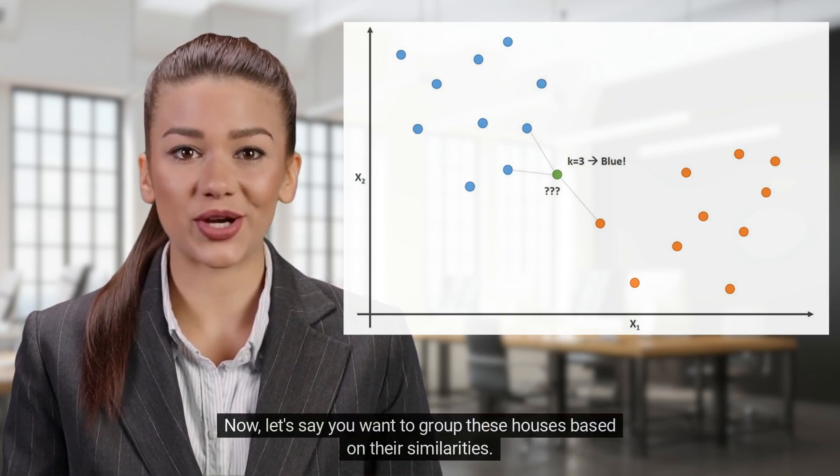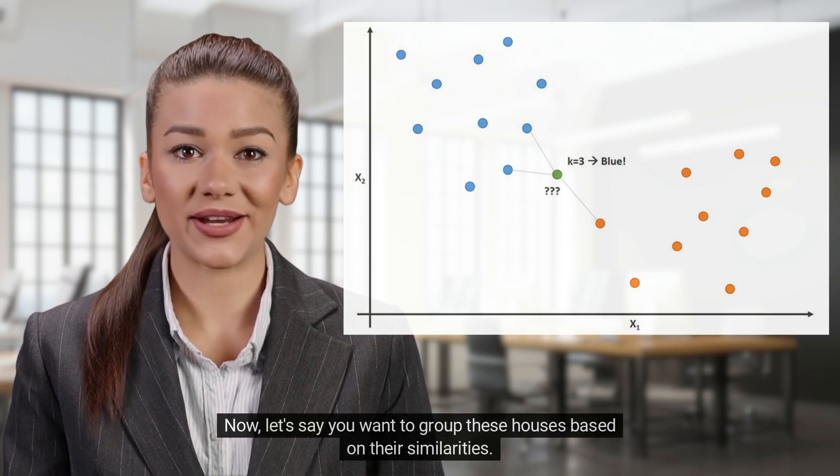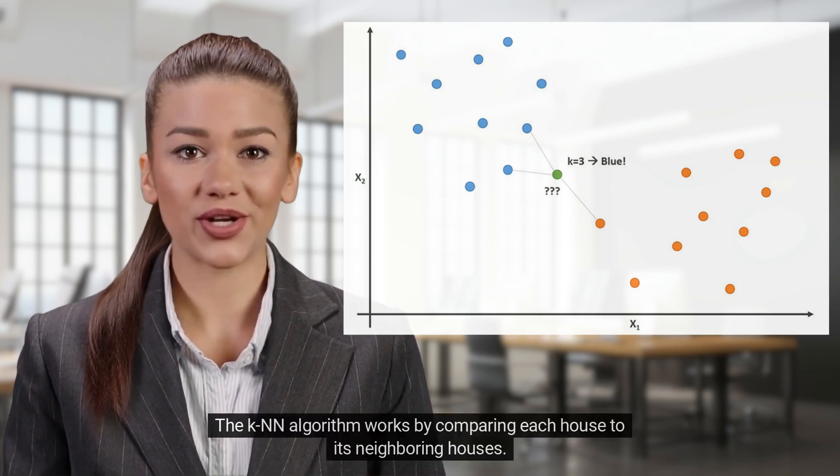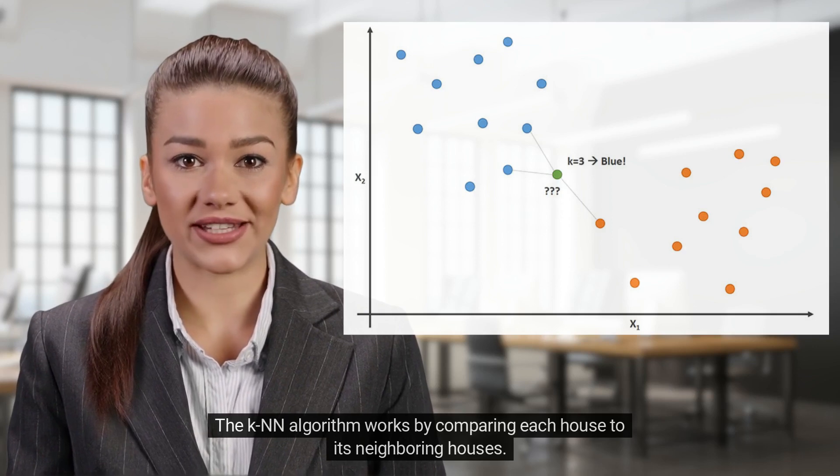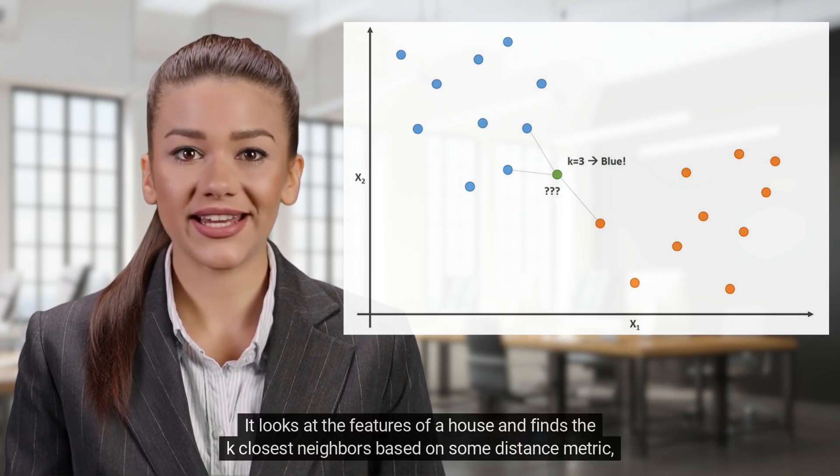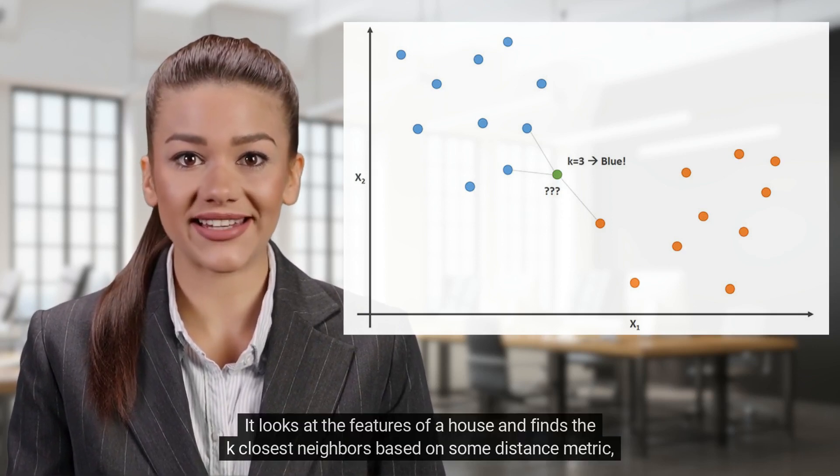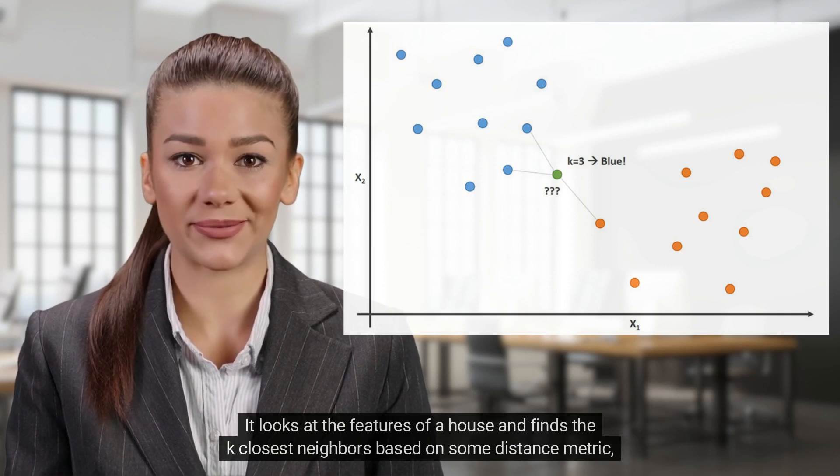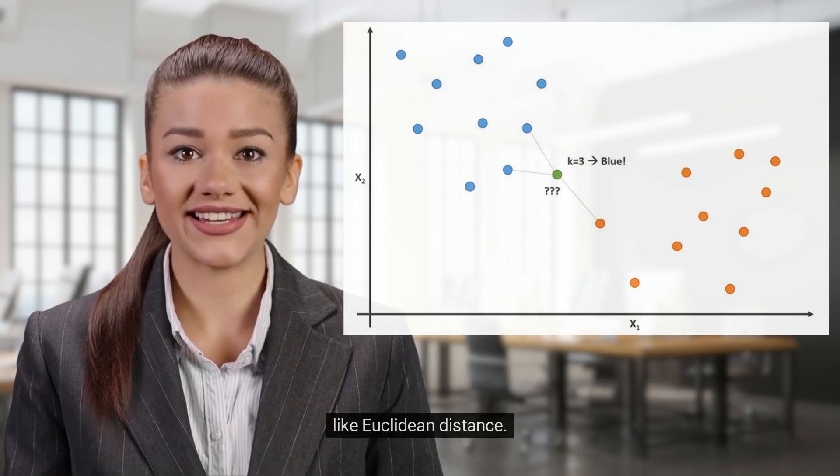Now, let's say you want to group these houses based on their similarities. The K-N-N algorithm works by comparing each house to its neighboring houses. It looks at the features of a house and finds the K-closest neighbors based on some distance metric, like Euclidean distance.